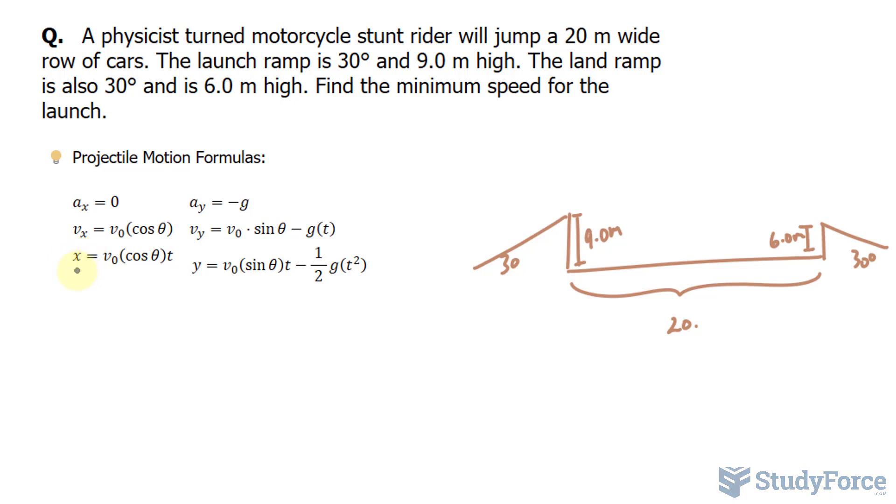I'll start off with this formula right here. This formula relates x and t. X being the distance from the launch pad all the way to the end. So I can replace x with 20 meters. I don't know what my initial velocity is, cosine at an angle of 30 degrees times t.